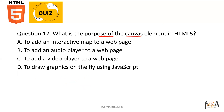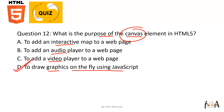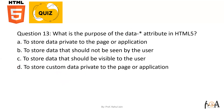Question number twelve: what is the purpose of the canvas element in HTML5? The options are — to add an interactive map, to add an audio player, to add a video player, or to draw graphics. The canvas element is basically used to draw graphics on the fly using JavaScript. Option D is the correct answer.